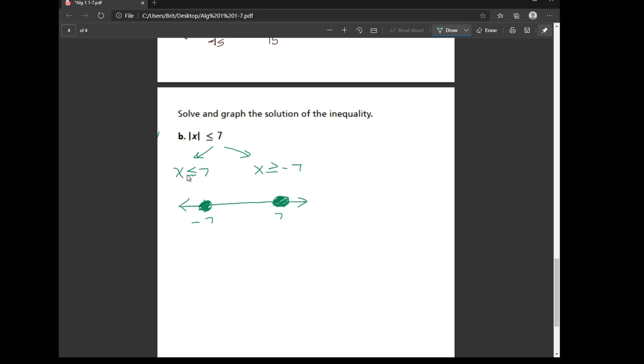And then the numbers where x is less than 7 come this way. And where they're greater than negative 7 also goes this way. So this is the graph that's produced.